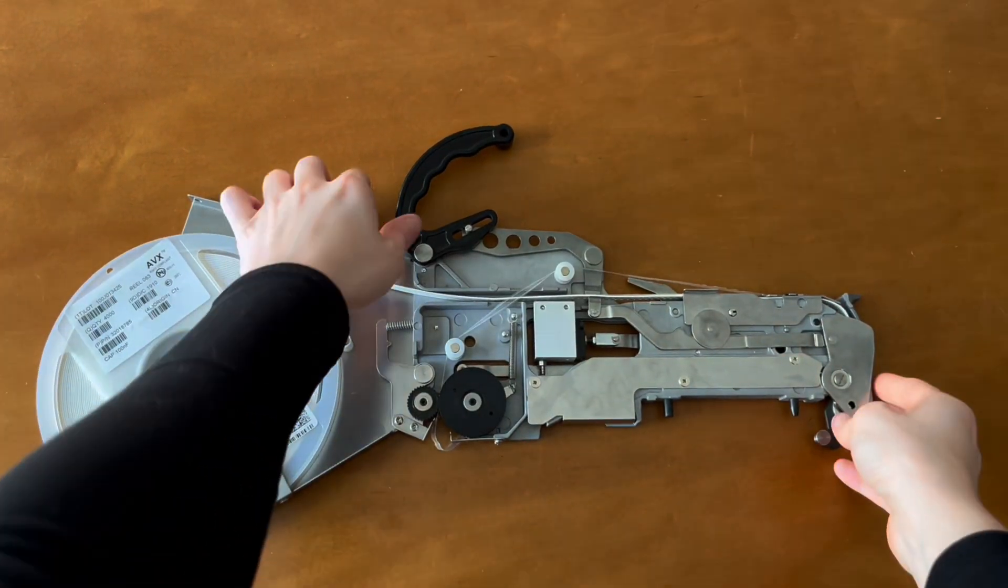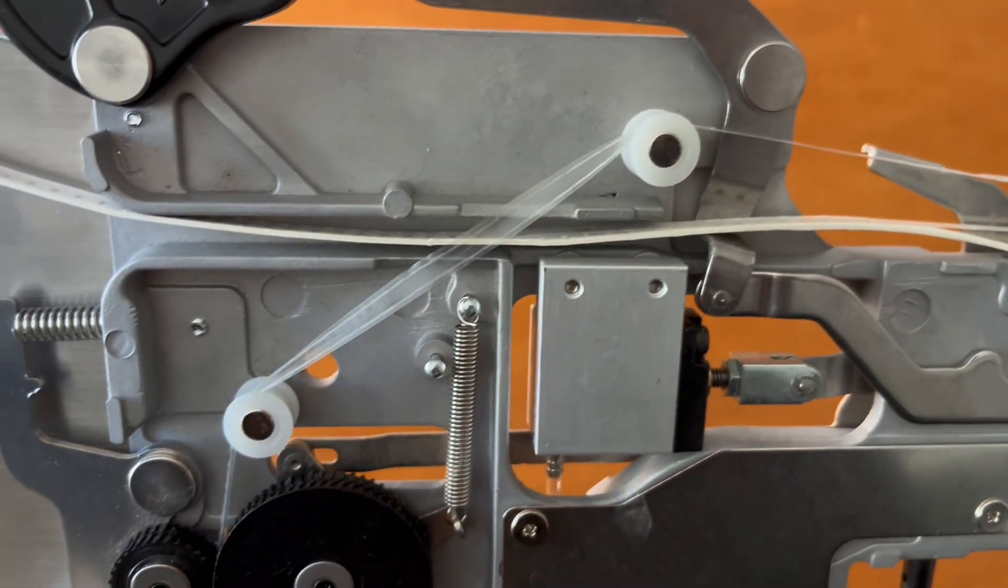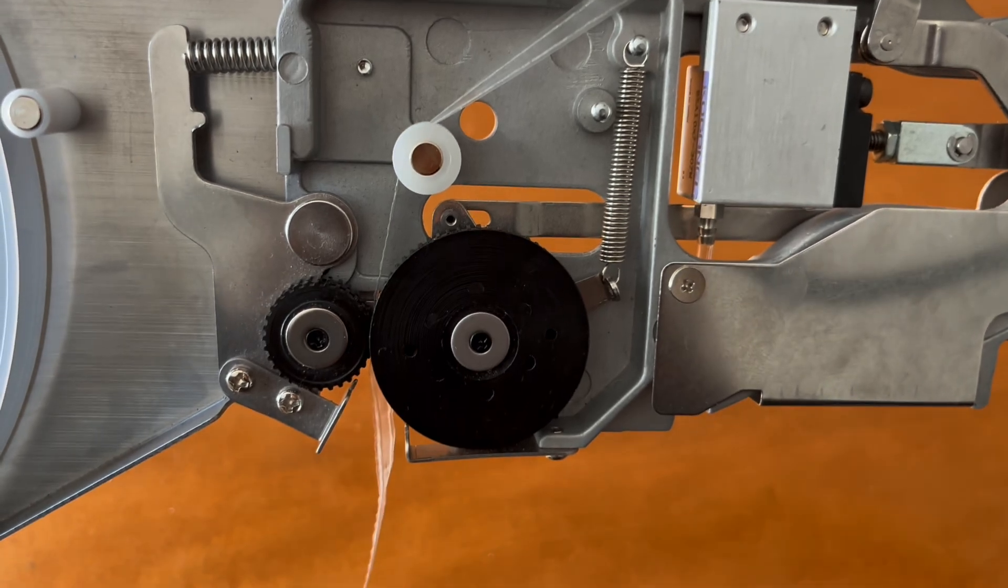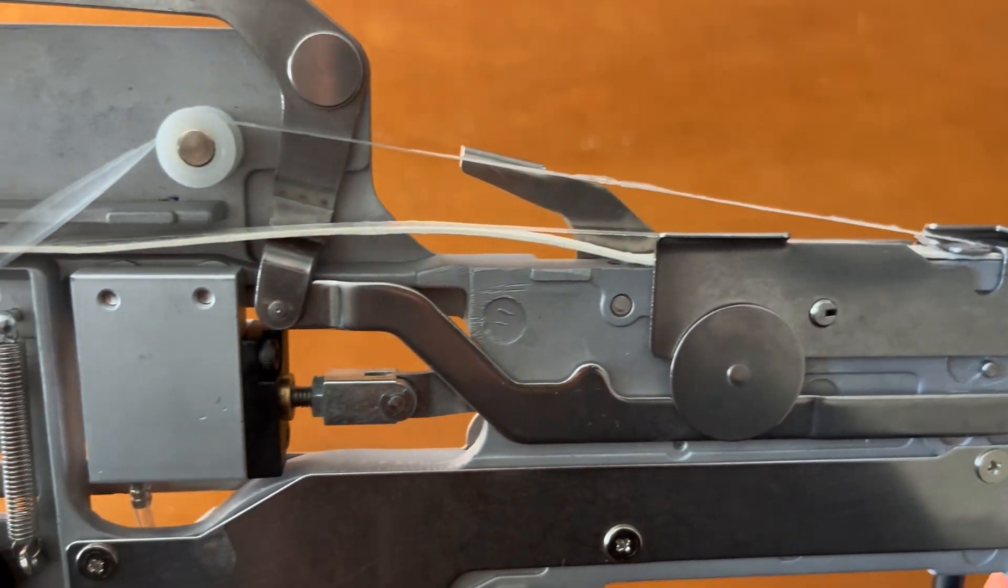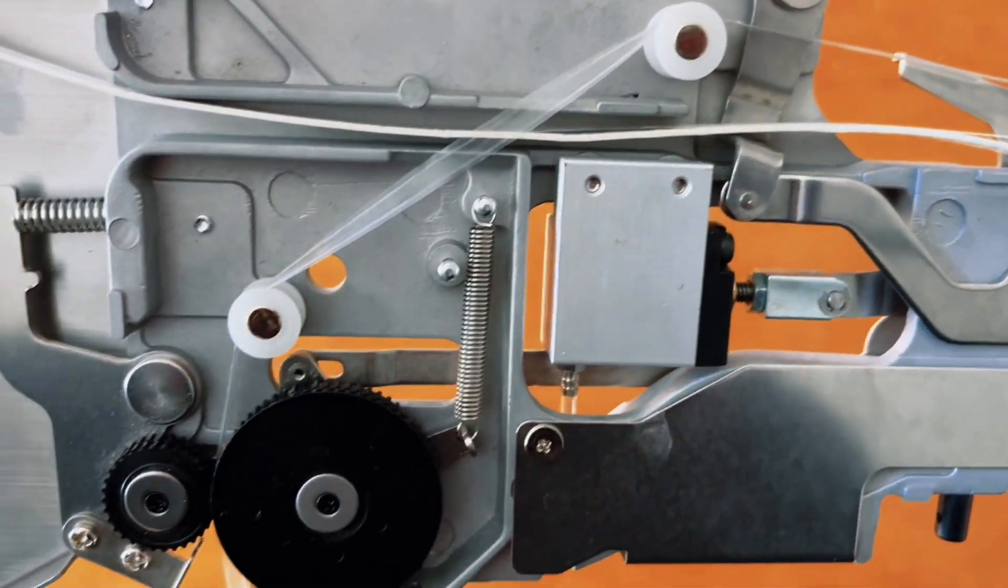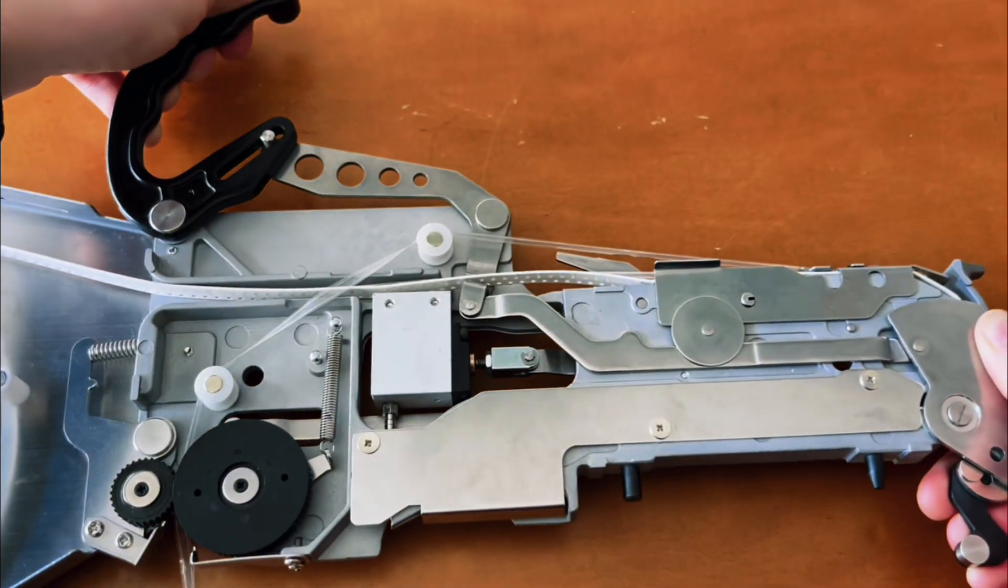Finally, don't forget to label your feeder. Write down the feeder number and the component's footprint and value for easy reference later in the process. And that's it. Your tape and reel is now properly loaded and your feeder is ready for use. Thanks for watching and happy assembling.